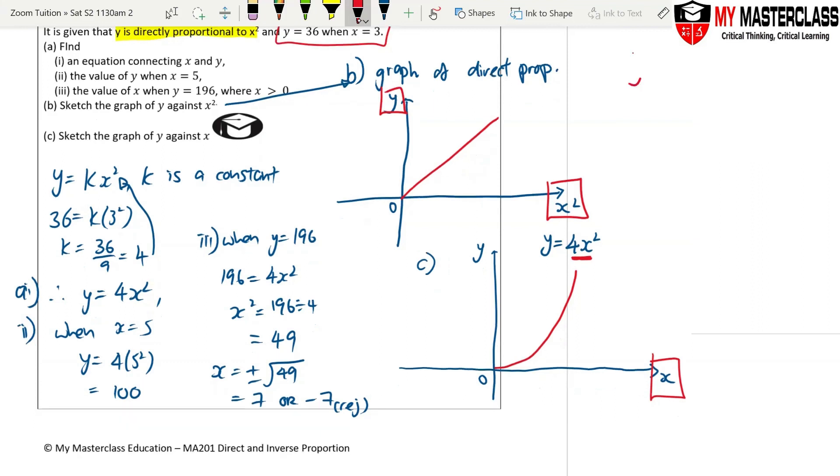That means, for example, if let's say y equals kx³, the y axis is y, the x axis is x³, then it will still be going up like that. Understand?